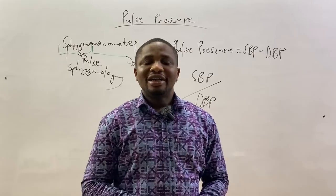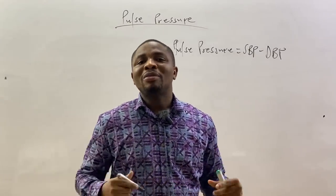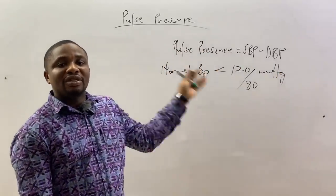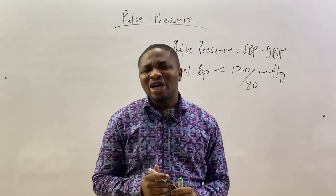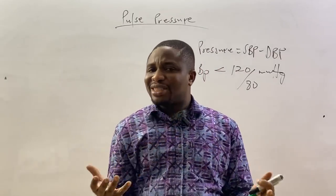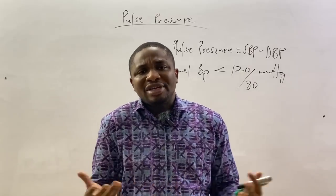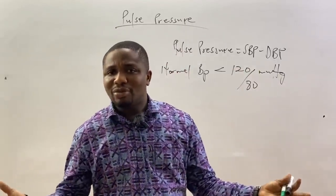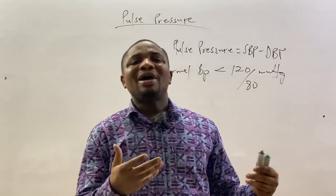Now let's talk about the normal values of pulse pressure. First, you should know the normal blood pressure. The normal blood pressure is less than 120 over 80 mmHg — meaning systolic is less than 120 mmHg and diastolic is less than 80 mmHg. However, we haven't defined the limits. For example, a systolic of 10 mmHg is mathematically less than 120, but a patient with that pressure would be dead.